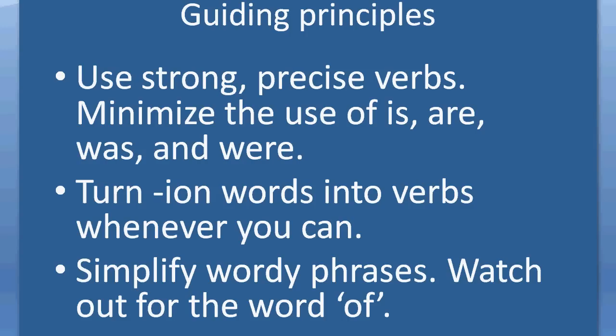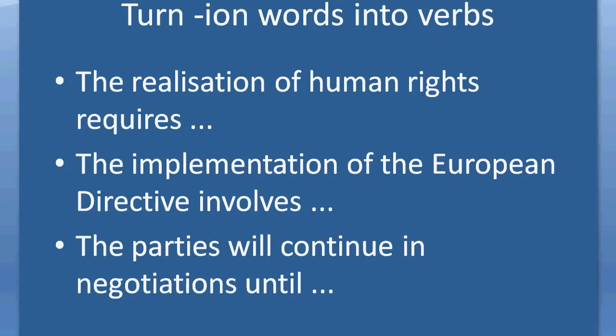Now let's consider turning -ion or -shun ending words into verbs. 'The realization of human rights requires' becomes 'Realizing human rights requires.' 'The implementation of the European directive involves' becomes 'Implementing the European directive involves.' 'The parties will continue in negotiations' becomes 'The parties will continue negotiating.' In each of these cases where you see a -shun or -ion ending noun, there is very often a simpler, more direct verb available.